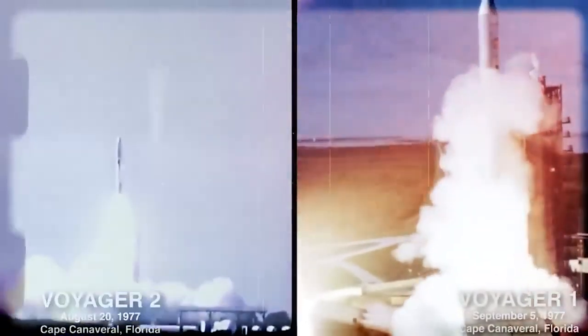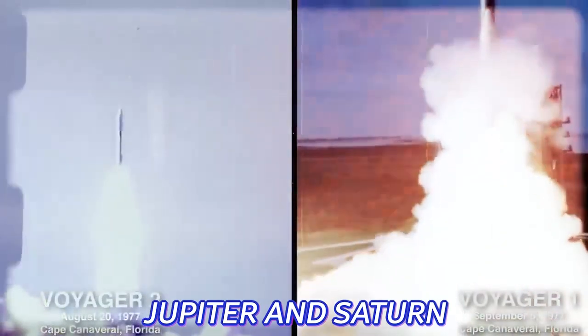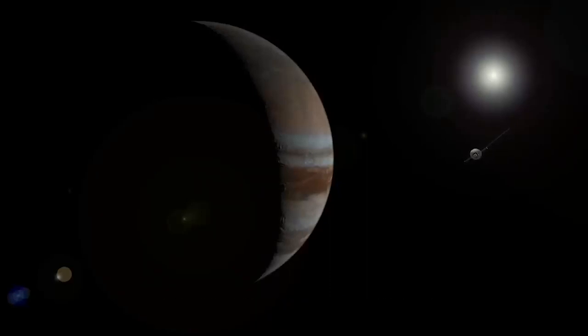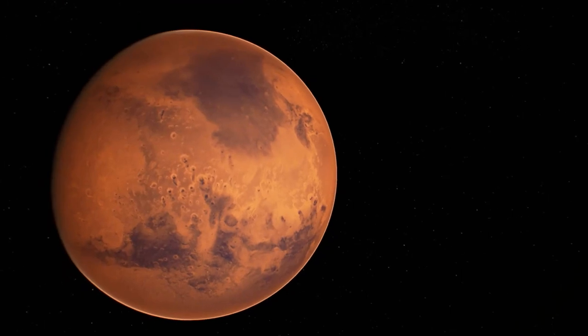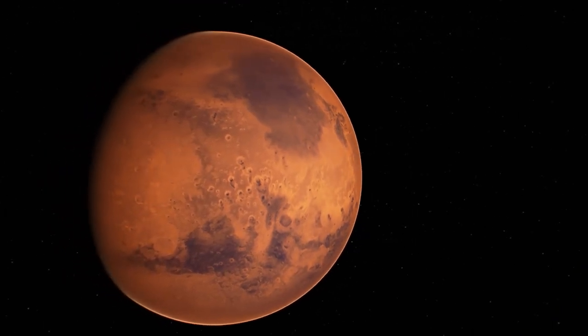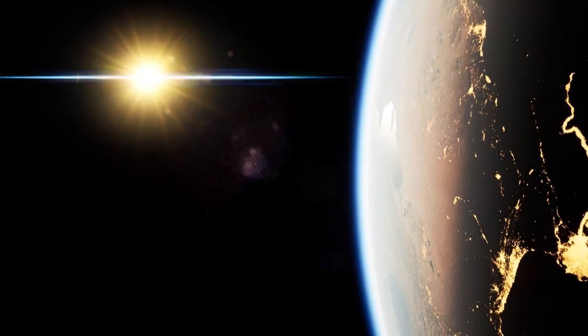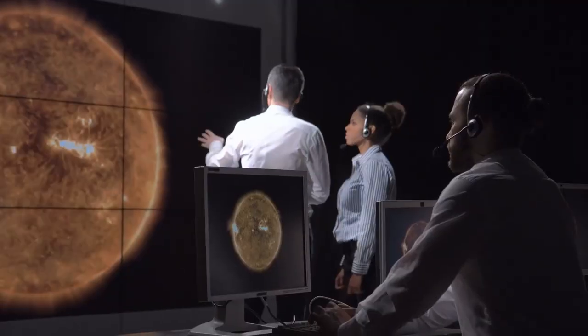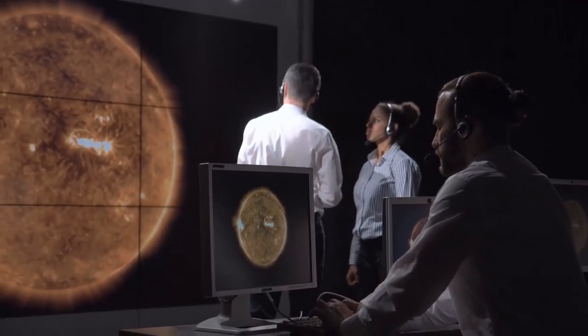After its launch, Voyager 1 made flybys of Jupiter and Saturn, taking detailed images of the planets and their moons and gathering important scientific data. The spacecraft's encounters with Jupiter and Saturn provided new insights into the formation and evolution of our solar system, as well as into the behavior of the gas giants themselves.